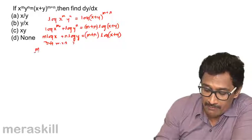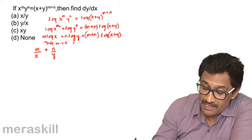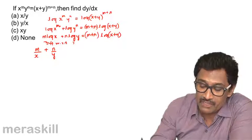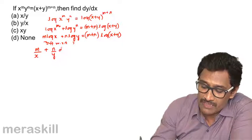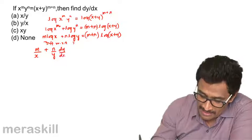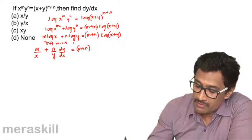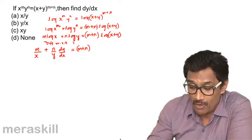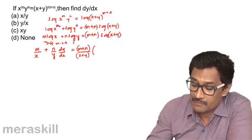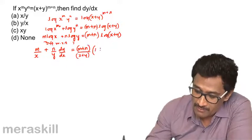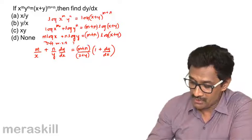m·log(x) differentiates to m/x; n·log(y) differentiates to (n/y)·(dy/dx) by chain rule. On the right side, d/dx of x is 1, d/dx of y is dy/dx, so the derivative of (m+n)·log(x+y) gives (m+n)/(x+y) · (1 + dy/dx).